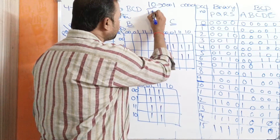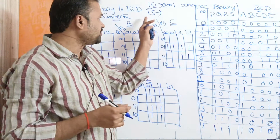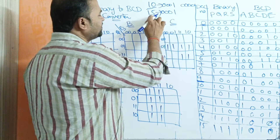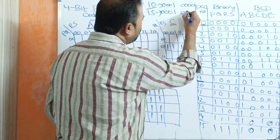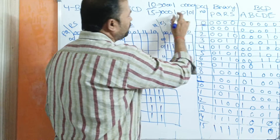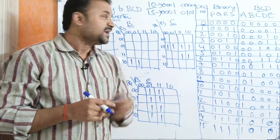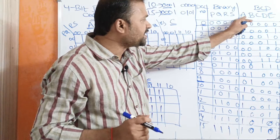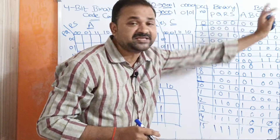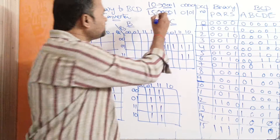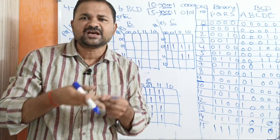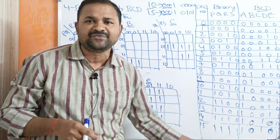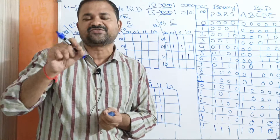Let us take the last number, 15. Here also we have 2 BCD digits: the first one is 1, and the second one is 5. In order to represent BCD digit 1, we require 4 bits: 0001. Likewise, in order to represent 5, we also require 4 bits. If we observe here, the first 3 bits are 0s only. Instead of using A, B, C, D, E, if we take XYZ for the first 3 bits, then we would write 0s in all those columns. So we are simply neglecting the first 3 zeros.